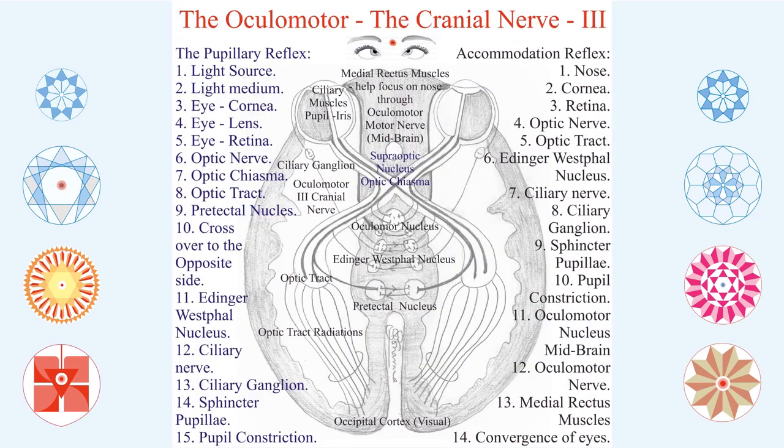Let us understand the oculomotor nerve — the third cranial nerve. It has the Edinger-Westphal nucleus, which produces autonomic parasympathetic fibers to produce constriction of the pupil, as I already explained. This is responsible for the pupillary reflex. For accommodation, there is another nucleus called the oculomotor nucleus, which is the voluntary motor nucleus in the midbrain and can help the movement of eye muscles to produce the accommodation reflex, also improving concentration. So the dual role of the oculomotor nerve — cranial parasympathetic as well as motor — is well explained here.